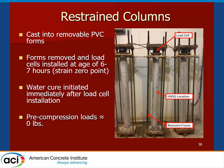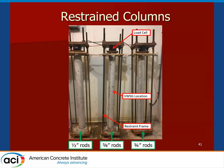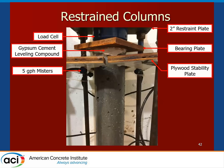For the restrained columns, specimens were cast into removable PVC forms to avoid trauma. Specimens were stripped at six to seven hours, around the time of final set for the concrete. Water cure was initiated using micromisters immediately thereafter, since there was no reservoir to hold water against the specimens. With careful load cell installation, pre-compression loads were kept as a non-factor. Three separate restraint levels were used: the 5/8-inch diameter steel rods matched the stiffness of mature concrete, while the 1/2-inch and 3/4-inch rods bracketed the problem with lower and higher restraint stiffness. A load cell with restraint and bearing plates measured the load development, and hydrostone leveling compound provided a uniform bearing surface.